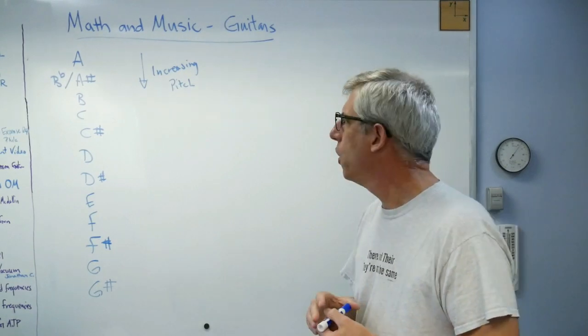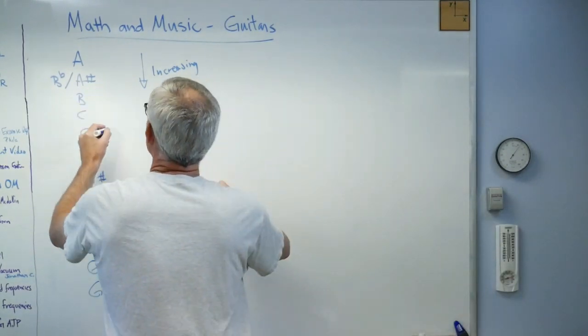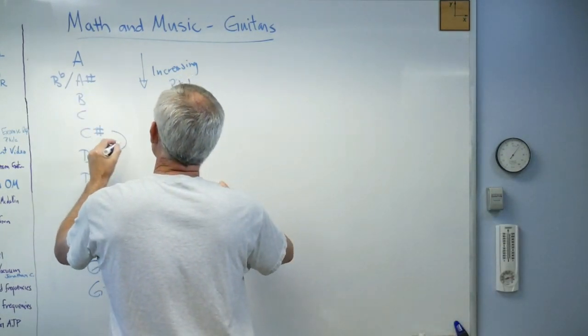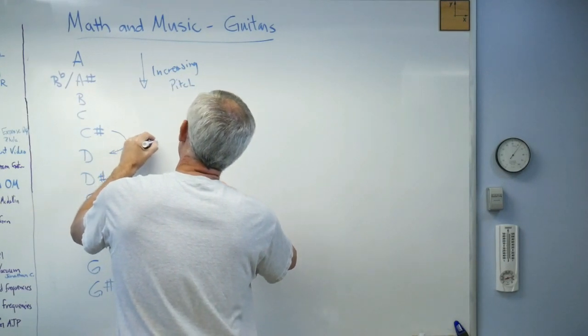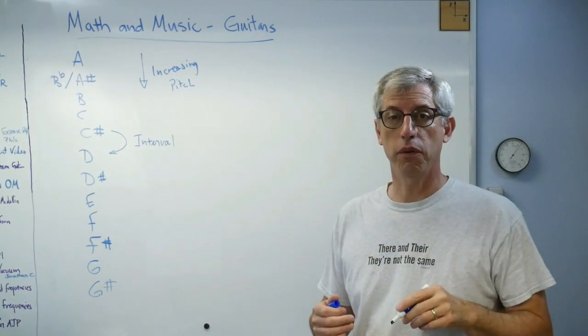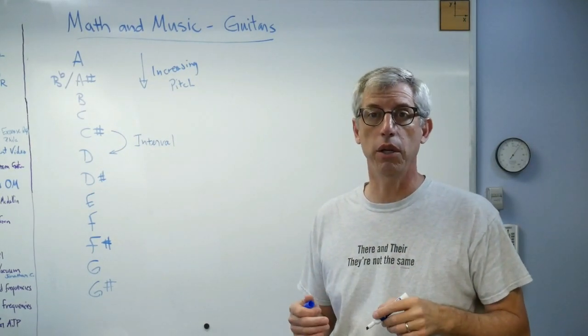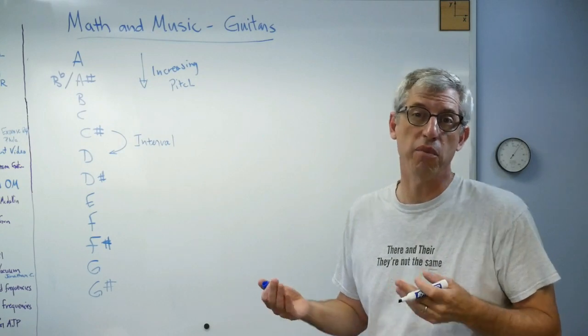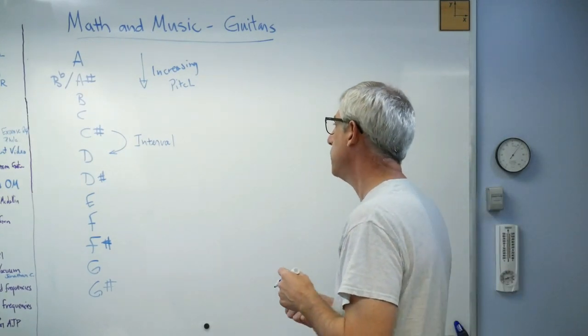But what's the math here? Well, music is defined in terms of intervals. And the interval is the frequency ratio between any two successive notes. If you can define the frequency ratio between any two successive notes, you can make a scale. You can make anything you want.